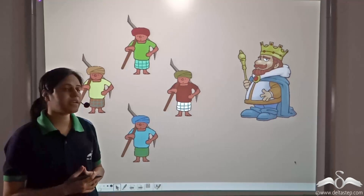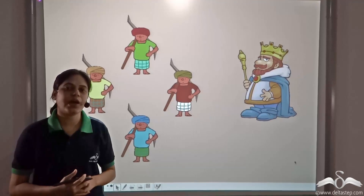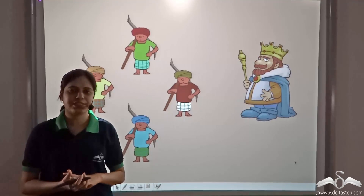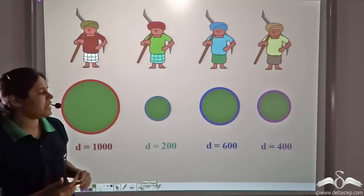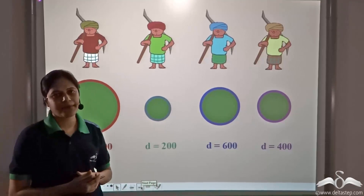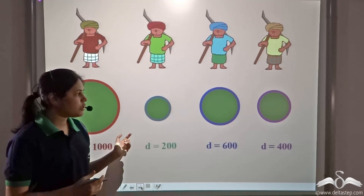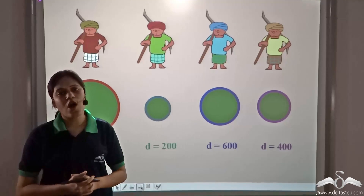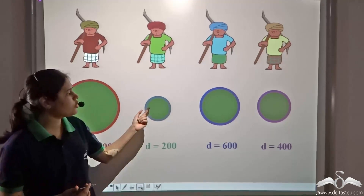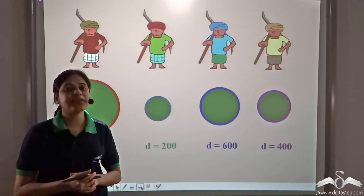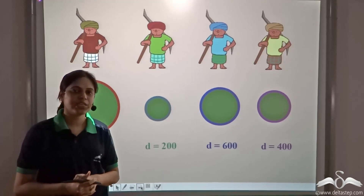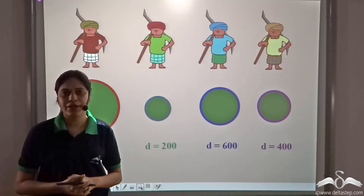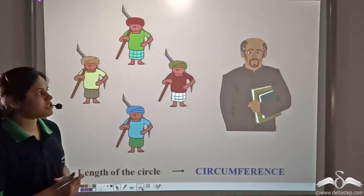Thousands of years back, there was a king who wanted beautiful circular gardens. He called his gardeners and ordered them to make circular gardens of different sizes. The king then wanted to put a gold fence around these gardens, so he asked his gardeners how much fence they would require and told them to give the exact measurement. These gardeners had no idea, so they went to a mathematician for help.